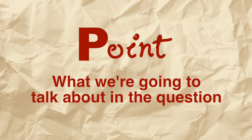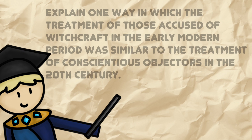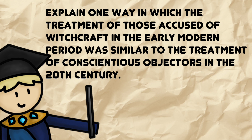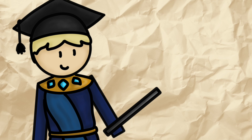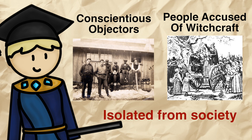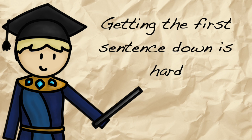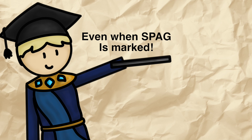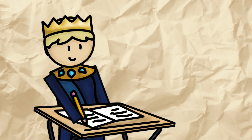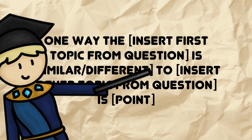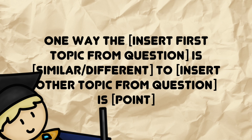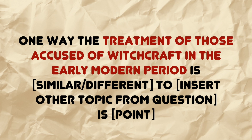First of all, we need a point. In this case, it's what we're going to talk about in our response to the question. For example, if our question was 'explain one way in which the treatment of those accused of witchcraft in the early modern period was similar to the treatment of conscientious objectors in the 20th century,' then we could talk about how both groups were isolated from society. So their isolation would be our point. To make life even easier, I would always start the first sentence in the same formulaic way: 'One way the [first topic] is similar/different to [other topic] is...' and then make your point. So that would be: 'One way the treatment of those accused of witchcraft in the early modern period is similar to the treatment of conscientious objectors is their isolation from society.'